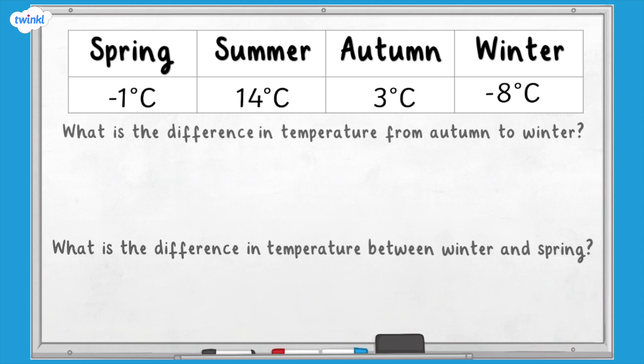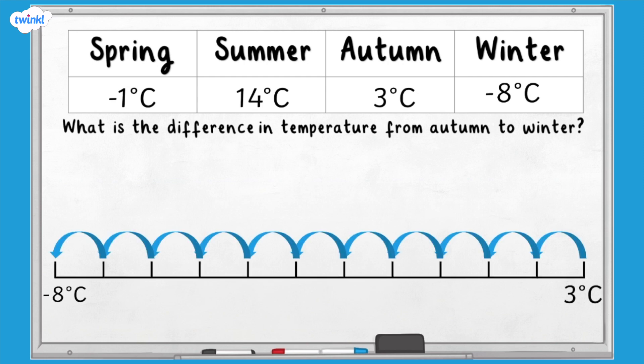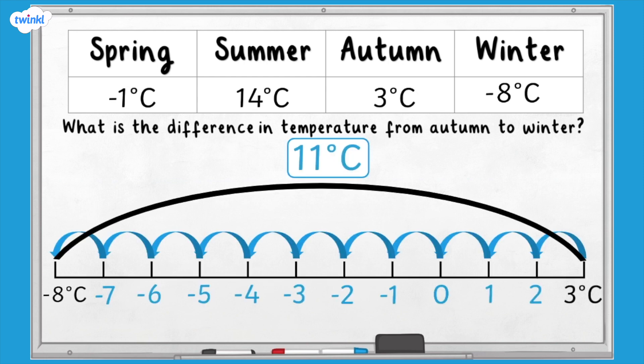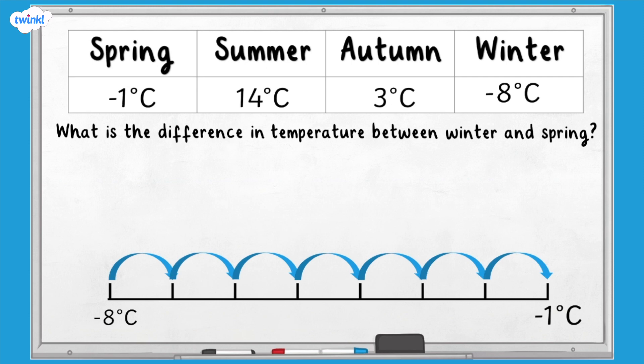How did you get on? Great. Let's check the answers. Negative 8 is 11 less than 3. So the difference in temperature is 11 degrees. In spring, the temperature is negative 1 degrees, which is 7 more than negative 8 degrees in winter. So the difference in temperature is 7 degrees.